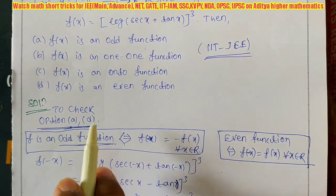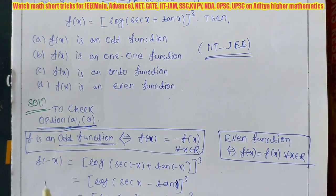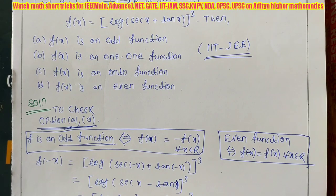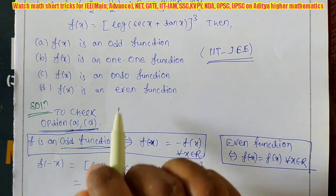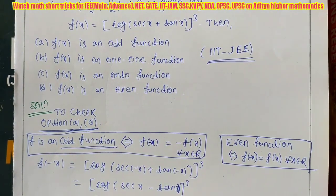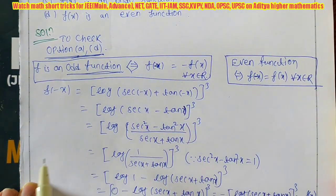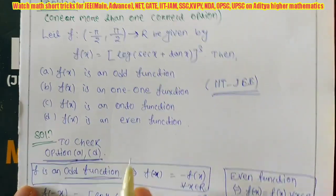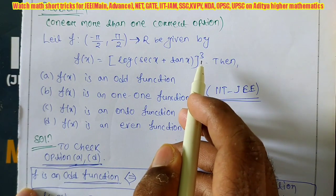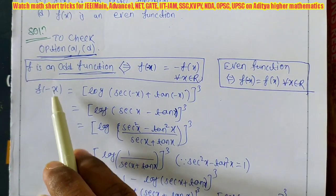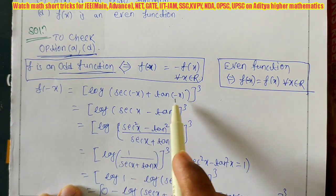So first I will check options A and D. In both cases we need to find f(-x). Since f(x) = log(sec x + tan x)³, we put -x in place of x, giving us sec(-x) + tan(-x). We know that sec(-x) = sec x (since cos(-x) = cos x), so we get sec x - tan x, and the whole expression is cubed. So f(-x) = log(sec x - tan x)³.